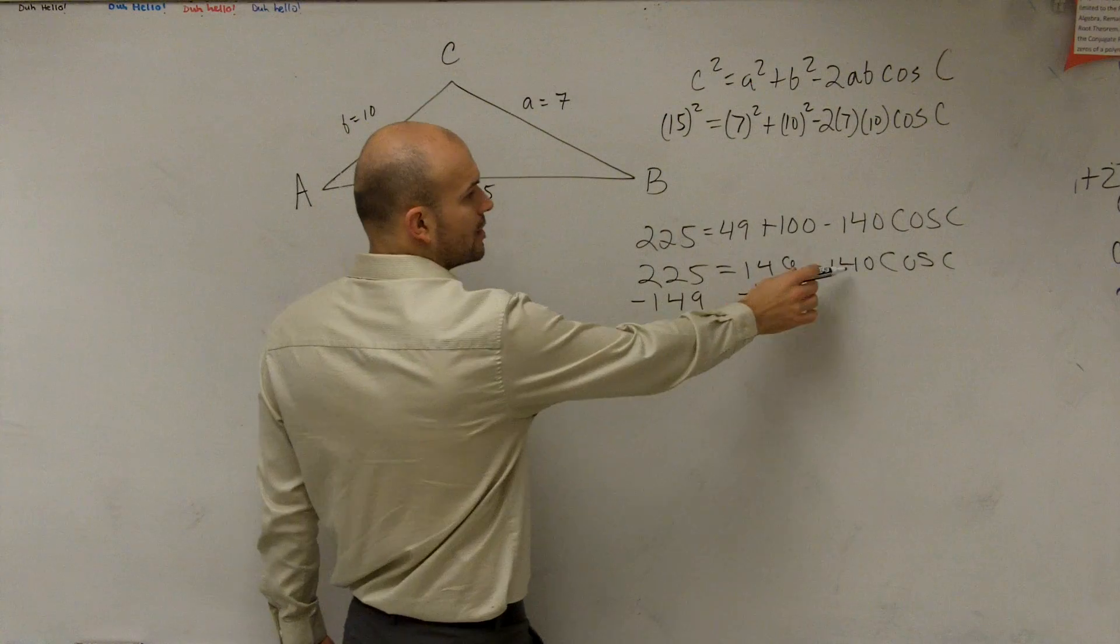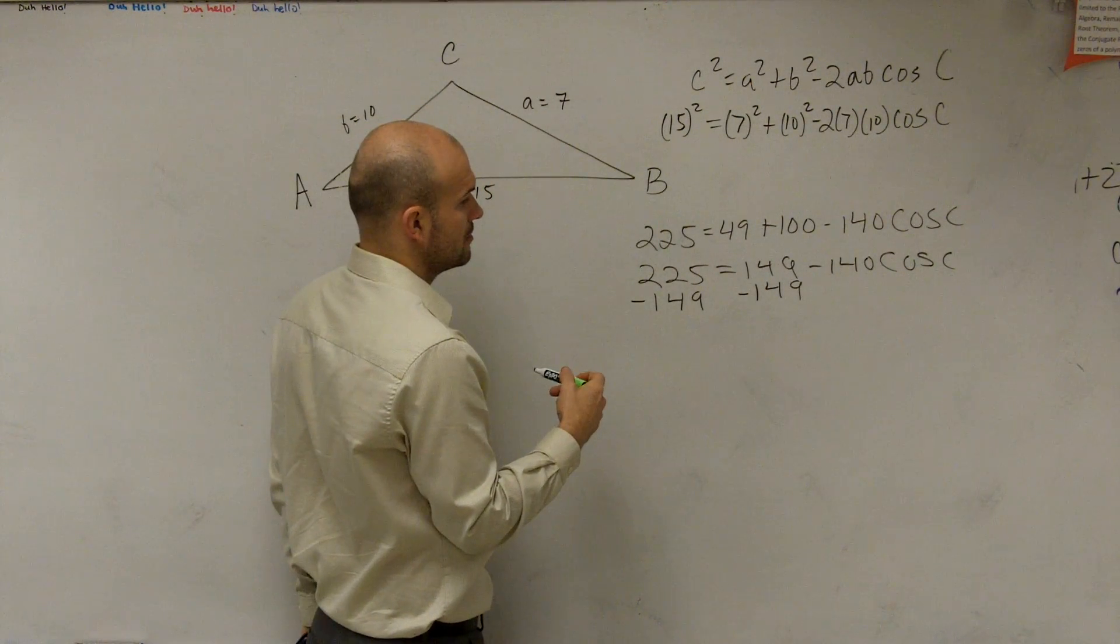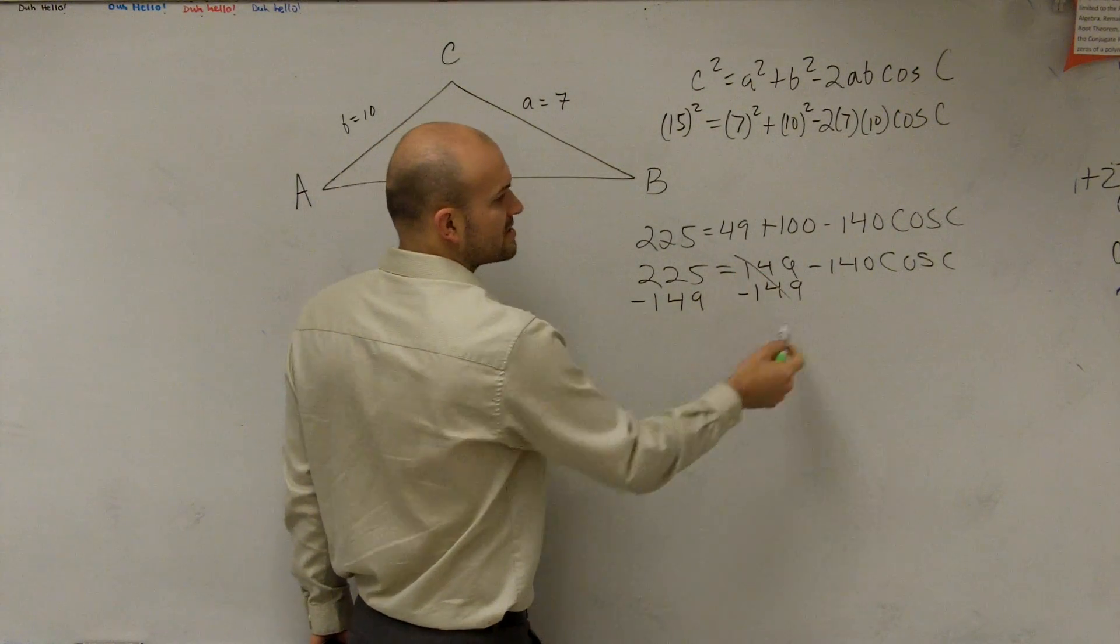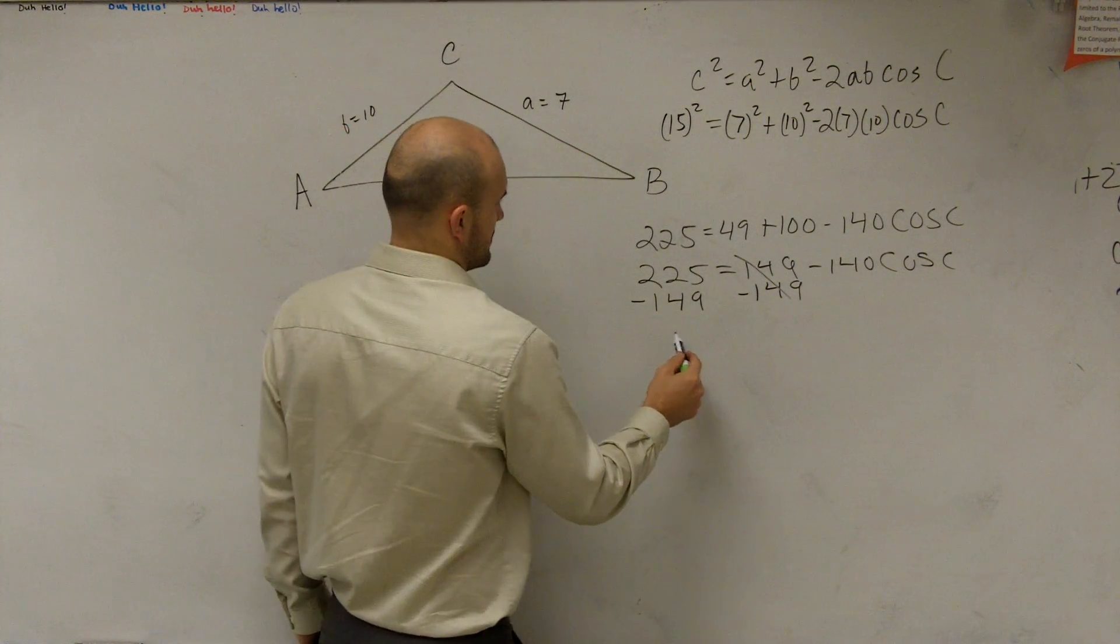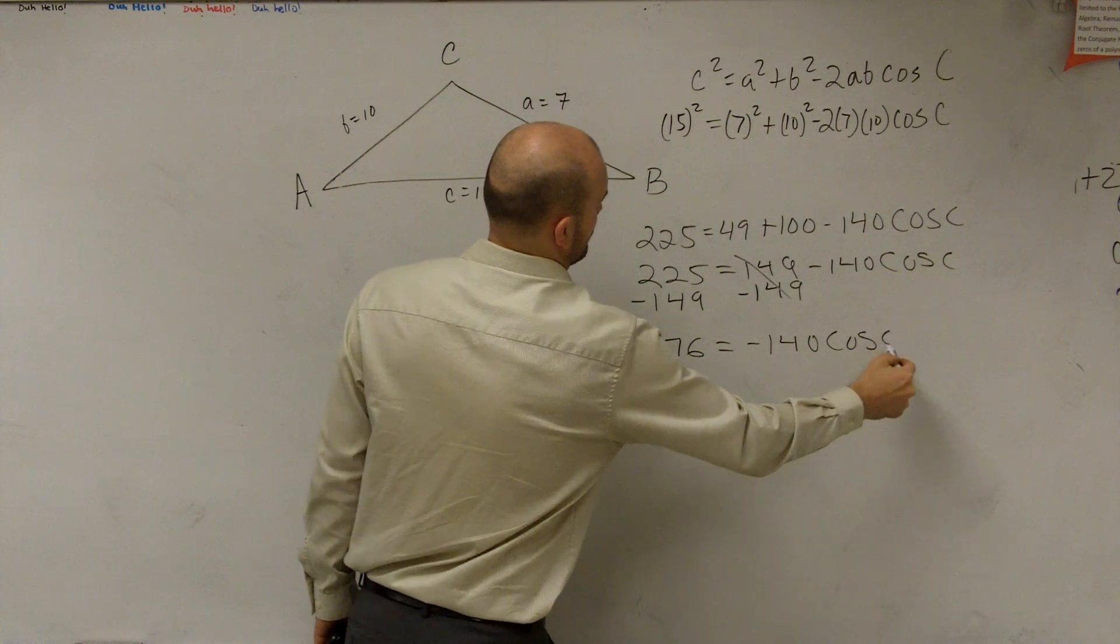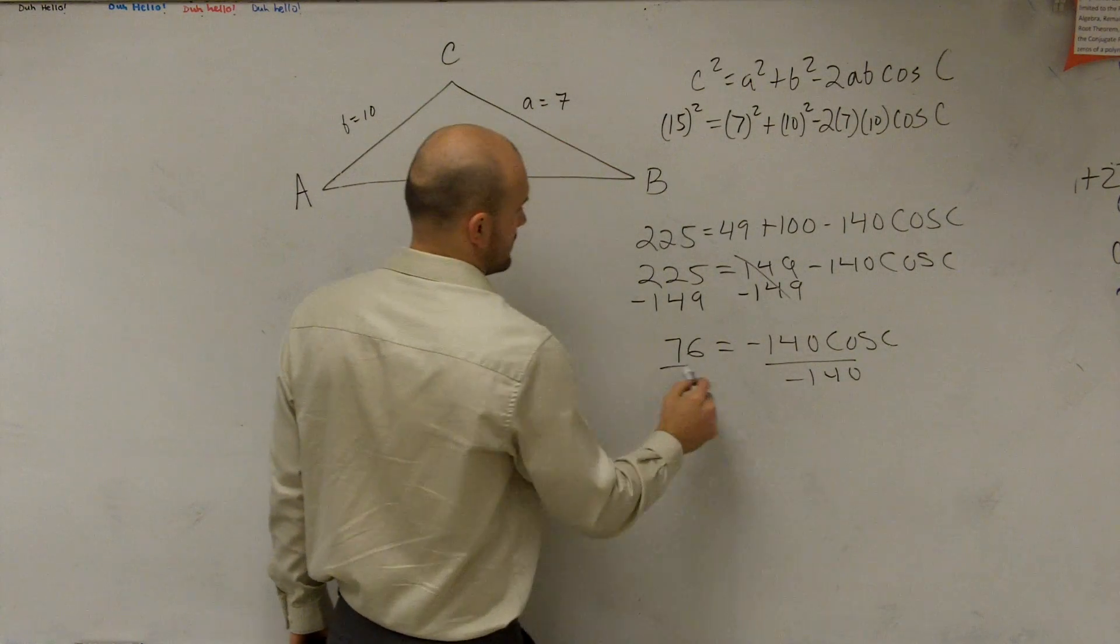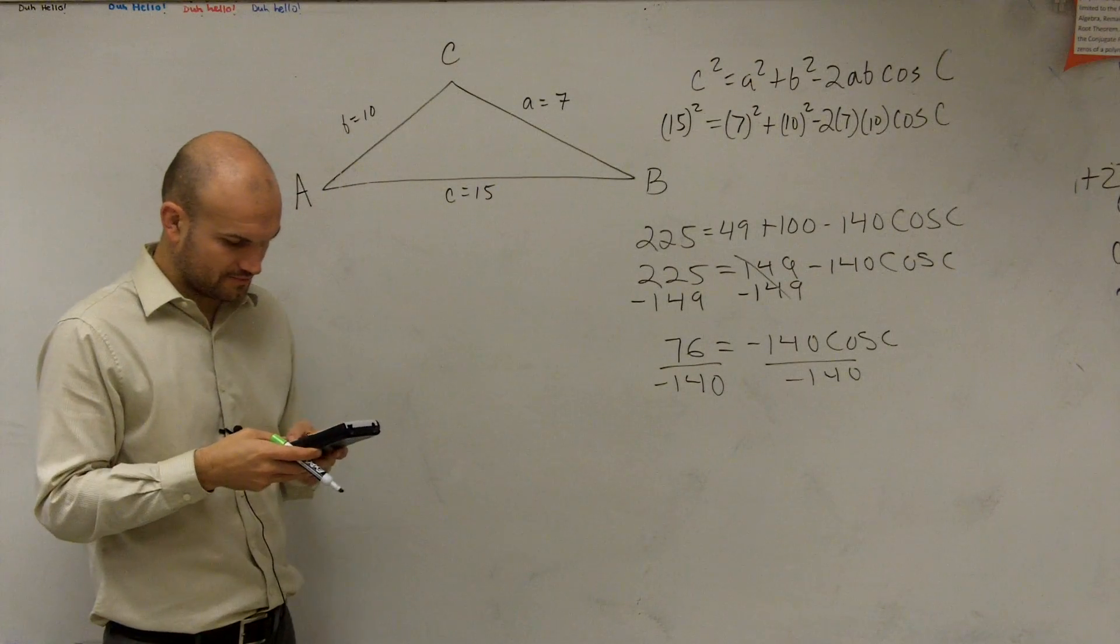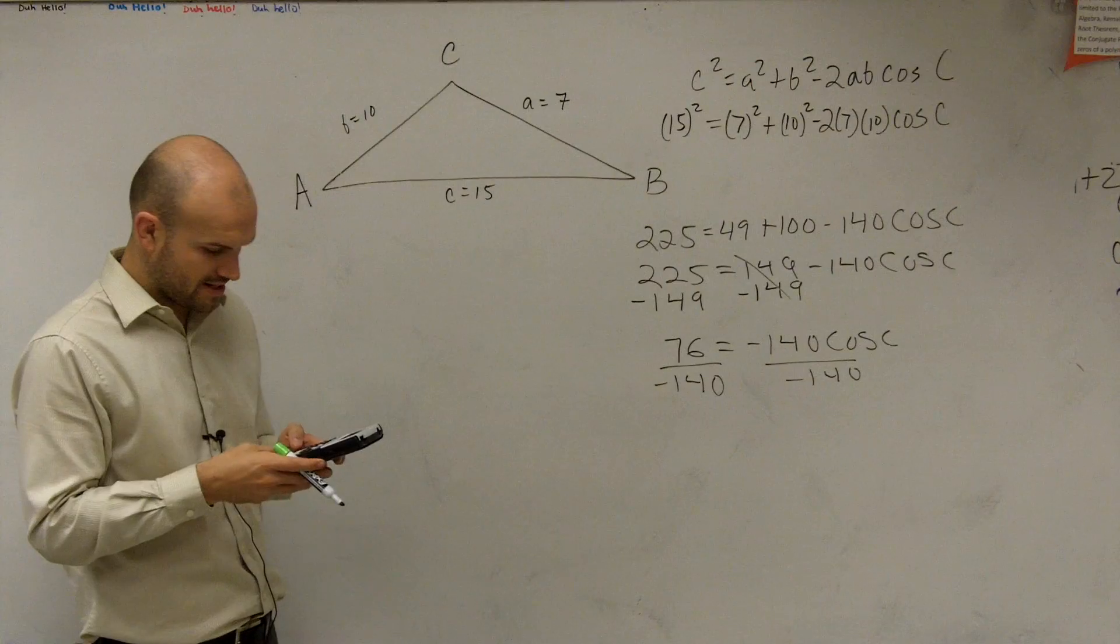No, then you'll divide by negative 140. So this subtracts out to 0. And then this is going to leave us with 76. Then we divide by negative 140. So there we say divided by negative 140.